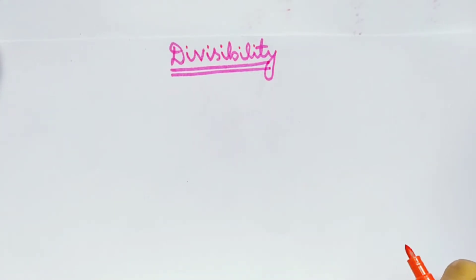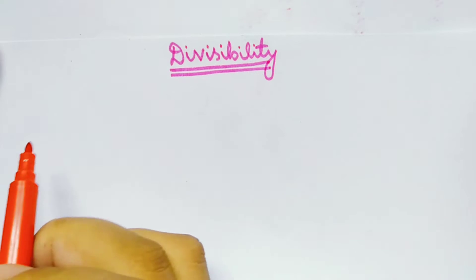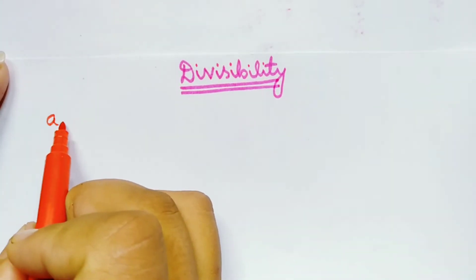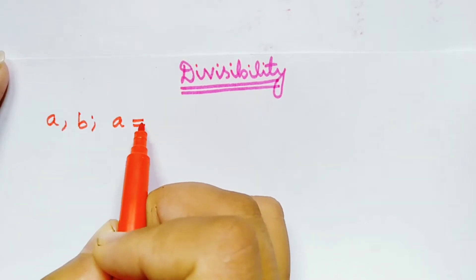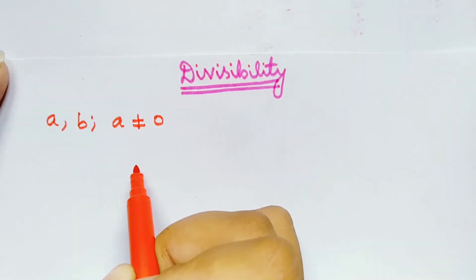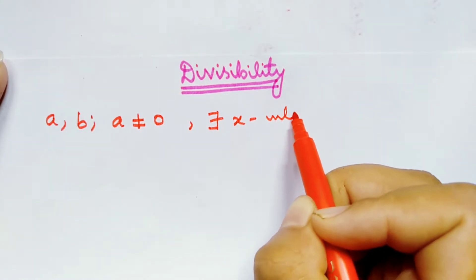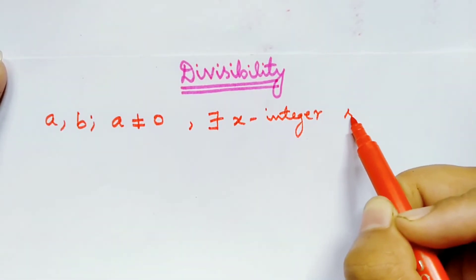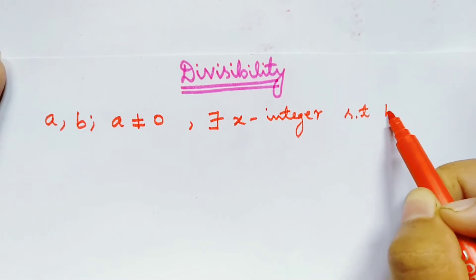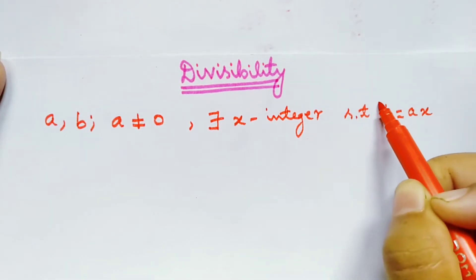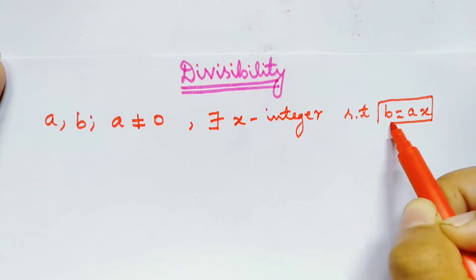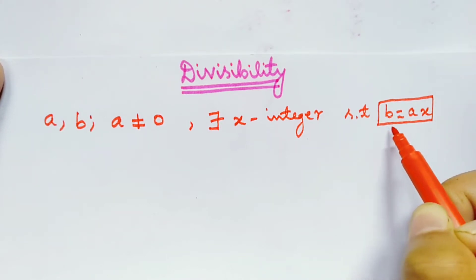In this video, I'm going to explain about divisibility and some important theorems related to divisibility. Suppose we have two integers a and b, where a is not equal to 0. Then we say that a divides b, or b is divisible by a, if there exists an integer x such that b is equal to a times x. If this happens, then we say that b is divisible by a, or a divides b.